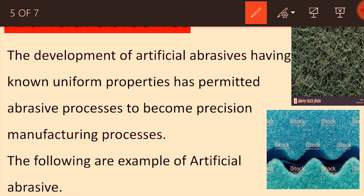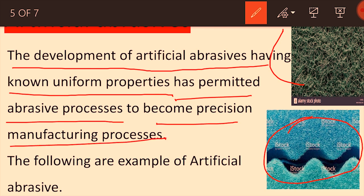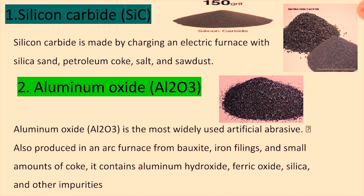Natural abrasives do not have a uniform structure — they are uneven. Artificial abrasives cover these shortcomings; you can see a very smooth and uniform surface. The development of artificial abrasives with known uniform properties has transformed abrasive processes and enabled precision manufacturing. The following are examples of artificial abrasives.